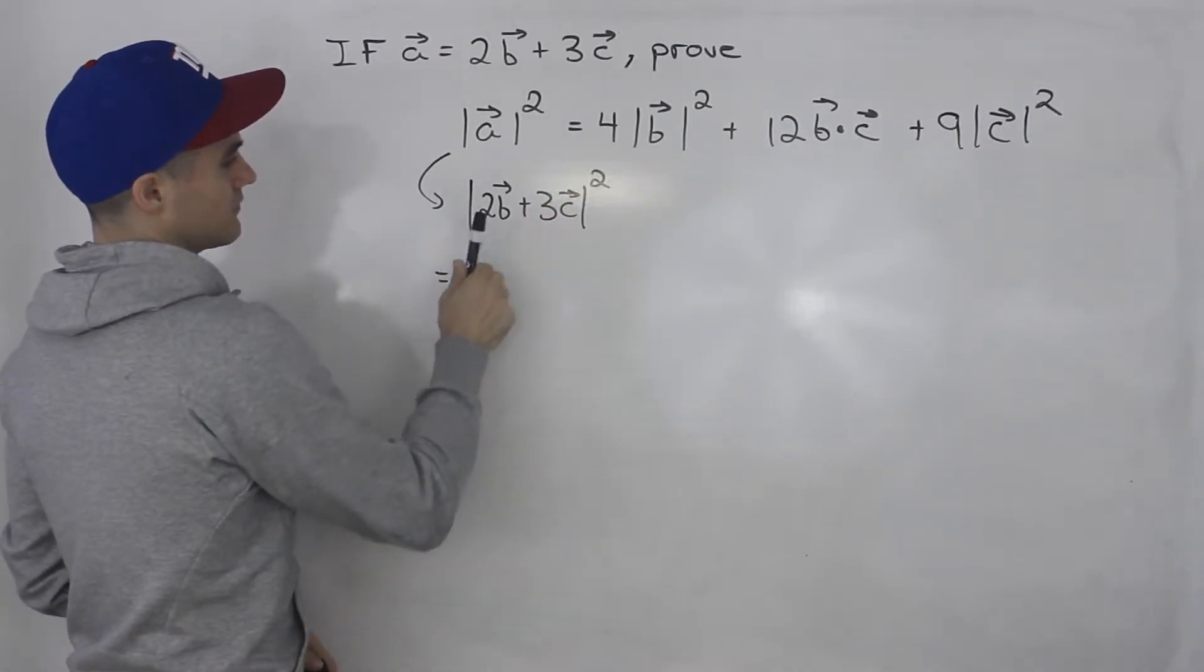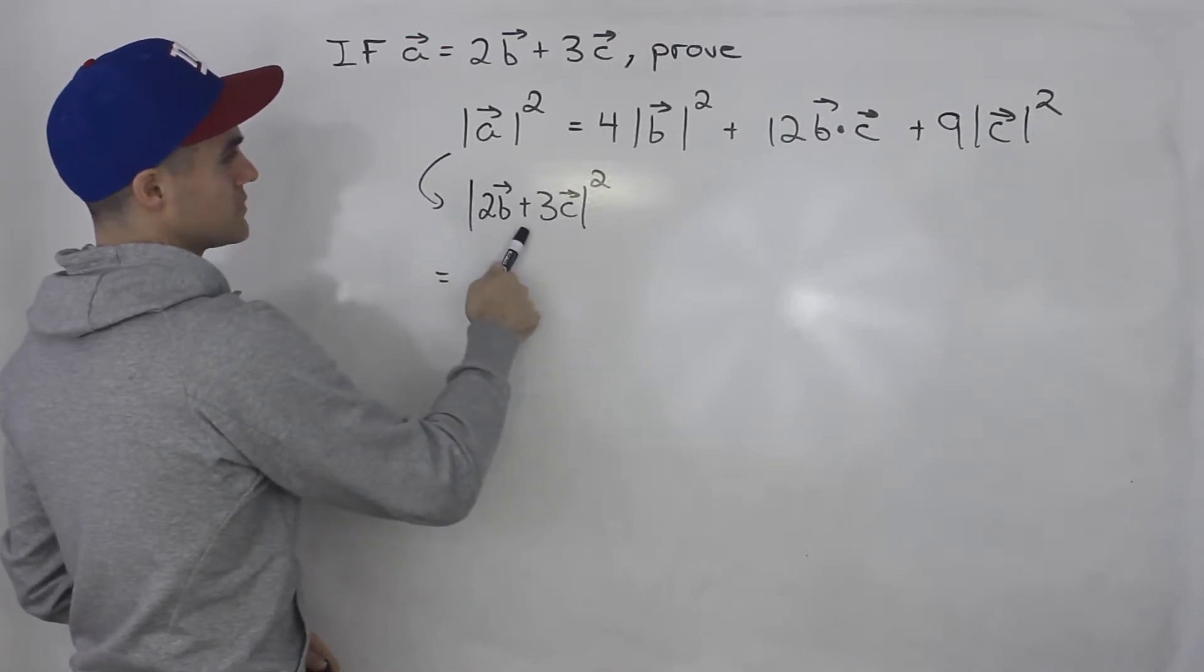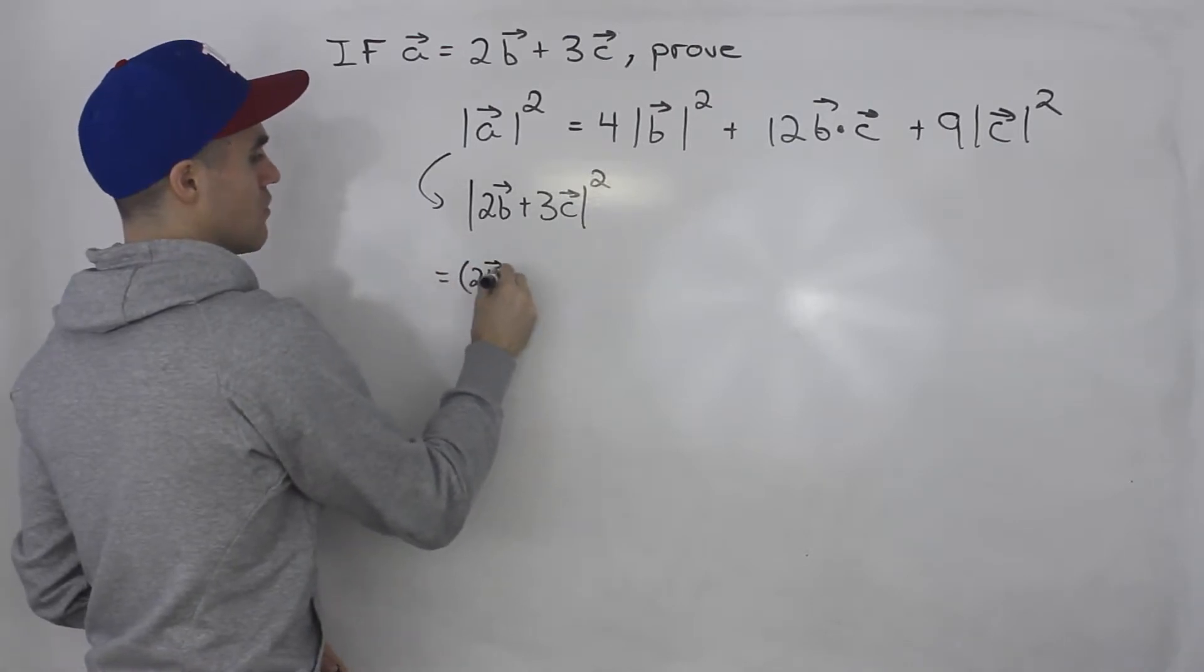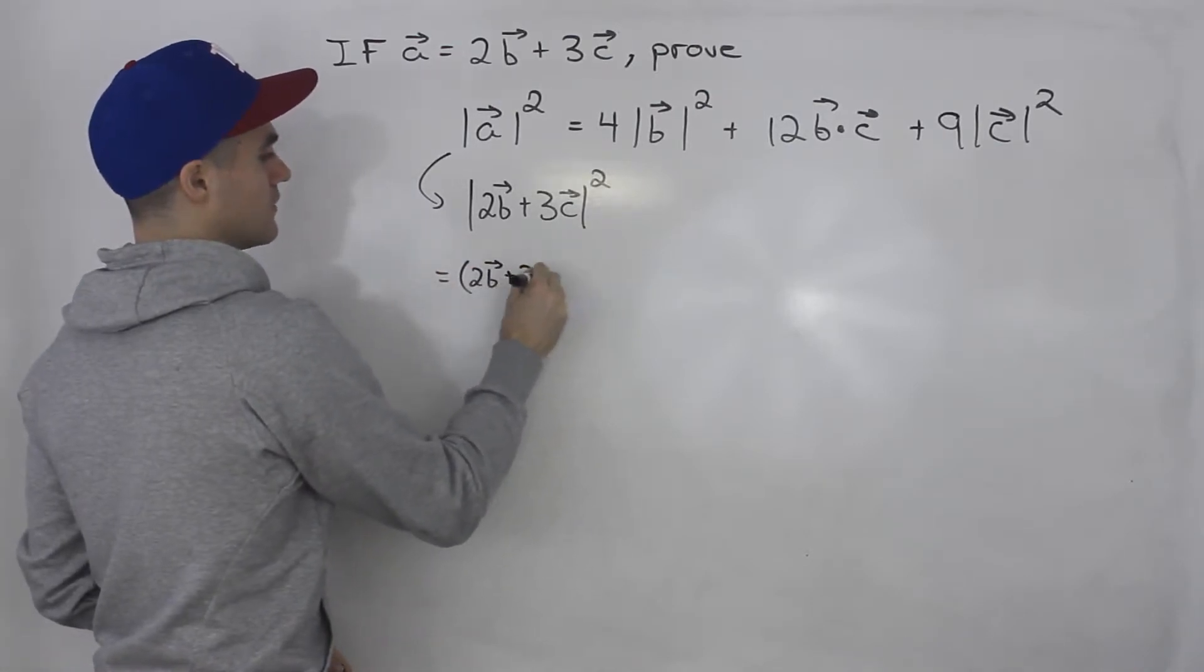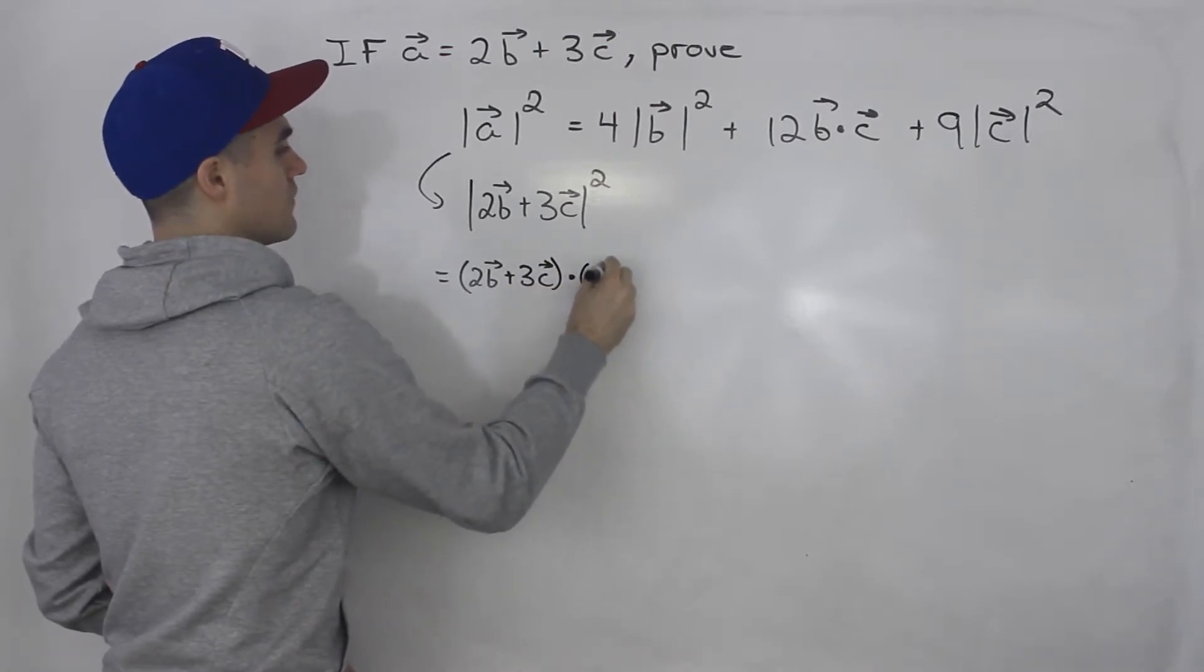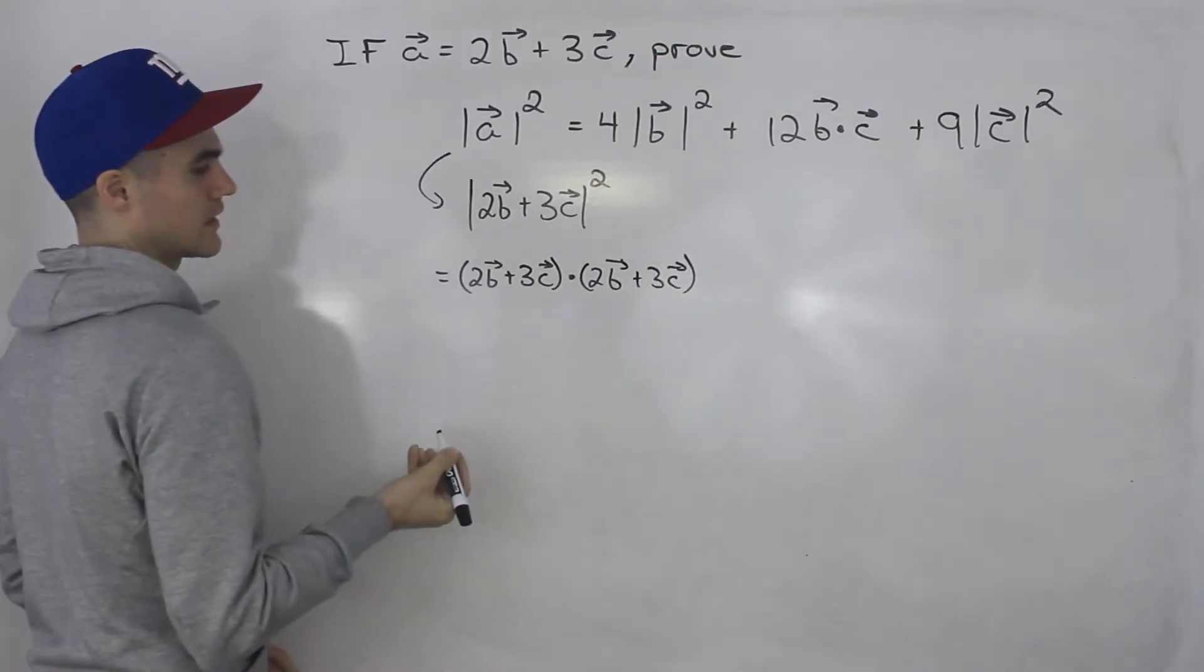What we can do is we know that the magnitude of a vector squared is equal to the dot product of that vector with itself.